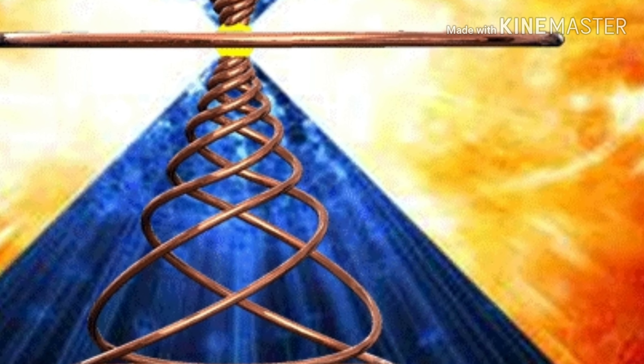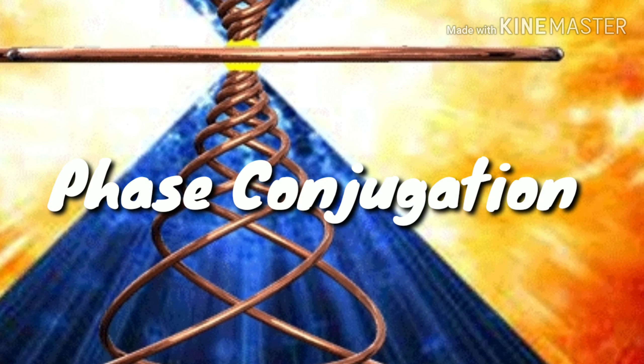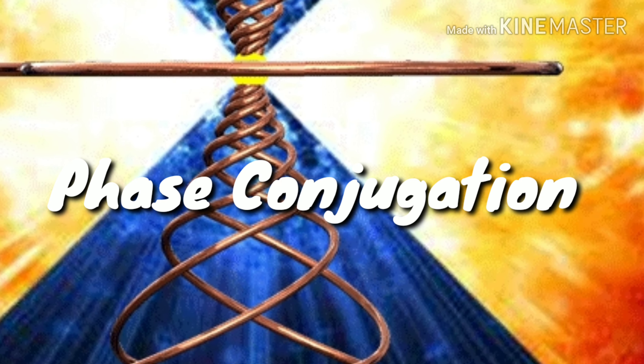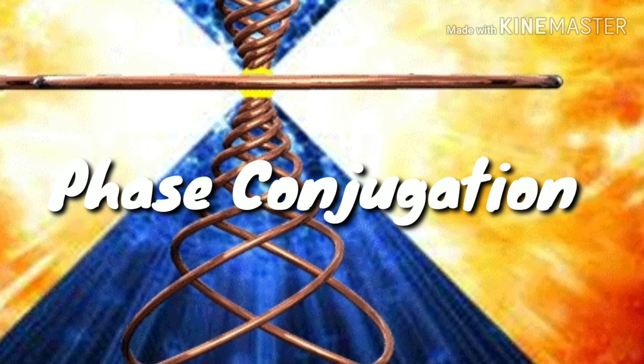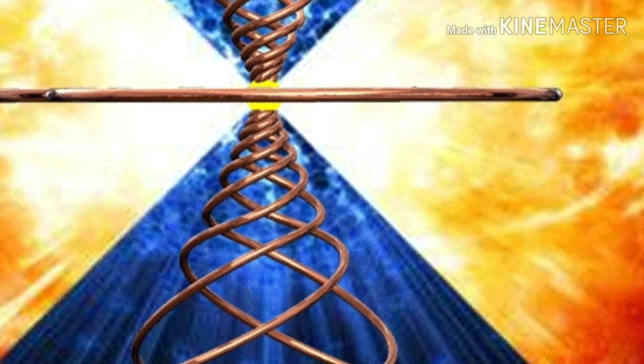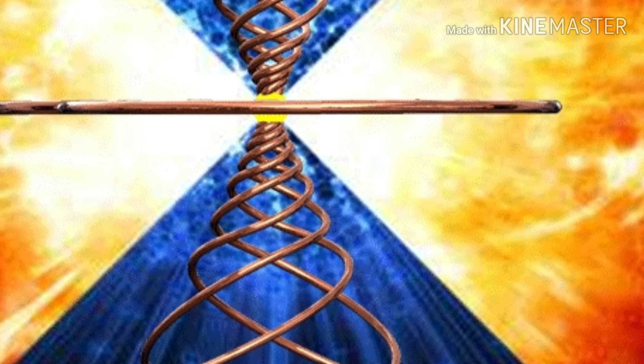Golden means ratio is what creates phase conjugation. Oh, phase conjugation? What's that? Don't let it scare you. Phase is a series, a pattern, or a time. It's a series of time that conjugates.